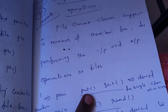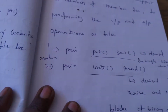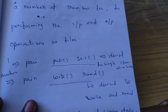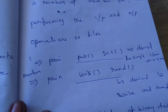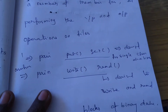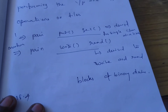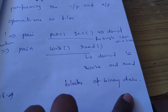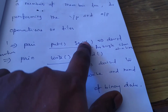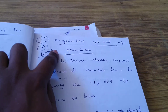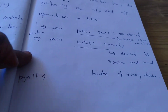One pair is the put and get methods, designed for single character at a time. Another pair is read and write, which is designed to write and read blocks of binary data. For character-based operations use put and get; for binary block operations use read and write.